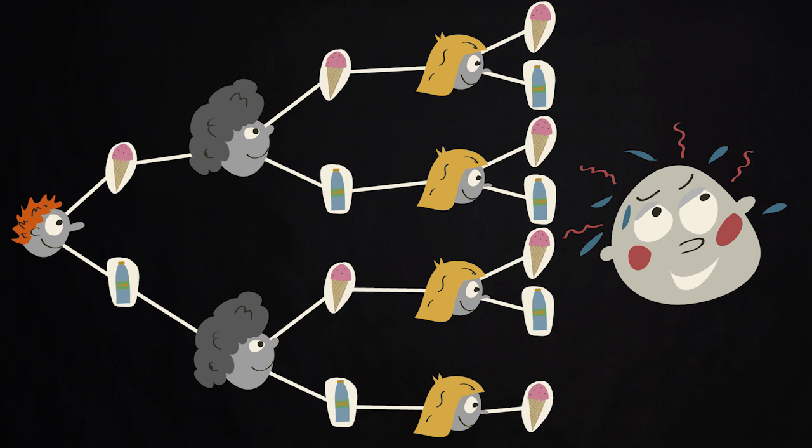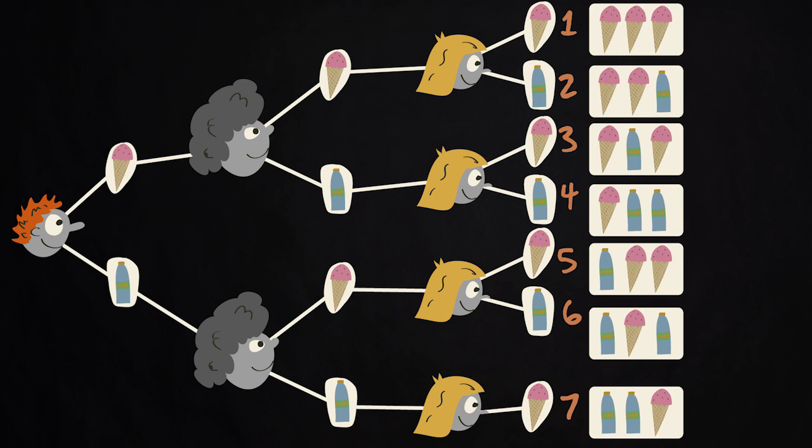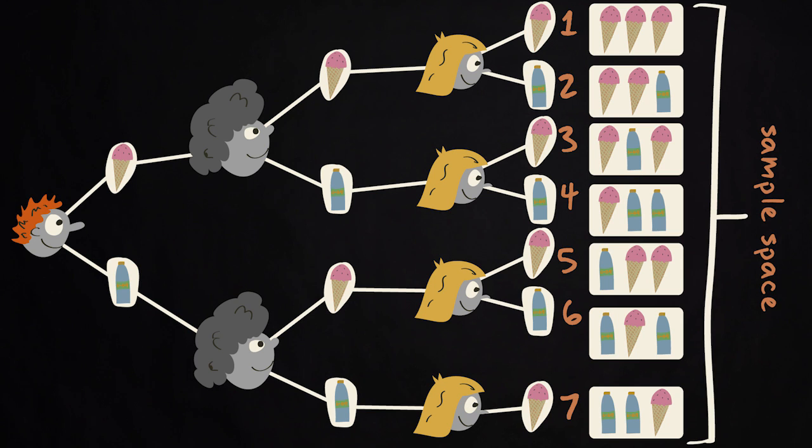Through this tree diagram, you have ordered all the possible outcomes of this random trial. There appear to be seven: all possible combinations of soft drinks and ice creams in a group of three, except for three soft drinks.